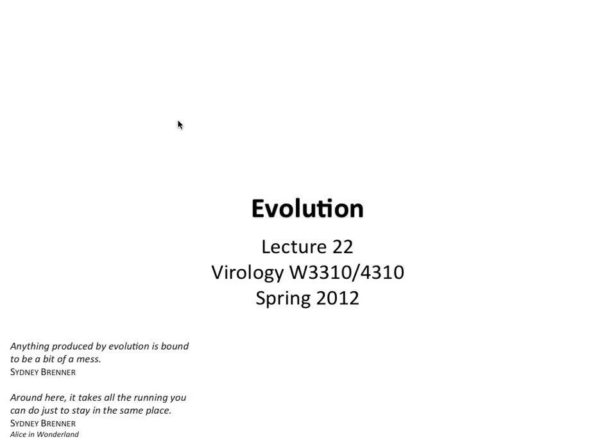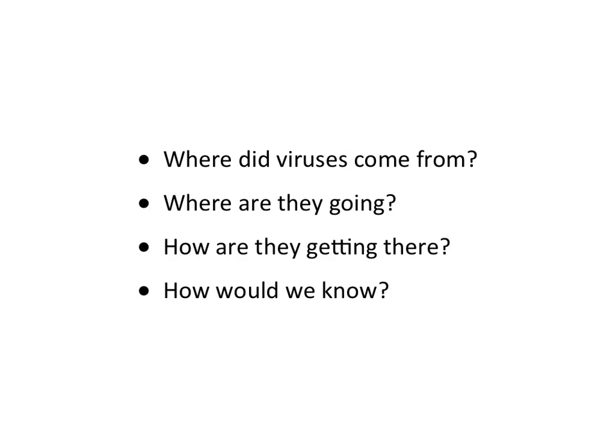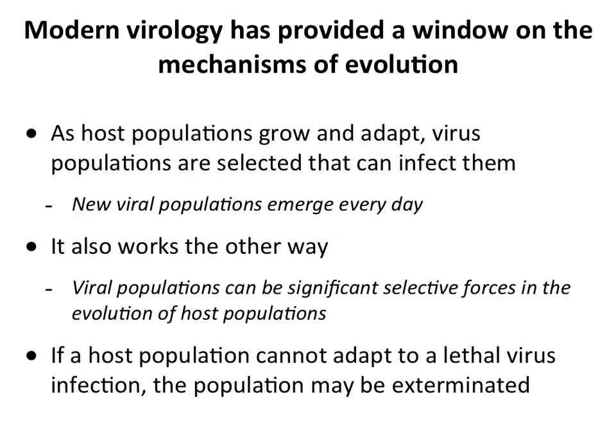Good afternoon. Everything we have talked about in this class so far is the product of evolution — the different kinds of structures, the replication schemes, pathogenesis, interaction with the host — all of it has been selected by forces we're going to summarize today. I'd like to talk about where viruses came from, where we think they're going, how they're going to get there, and how do we know — four general questions.